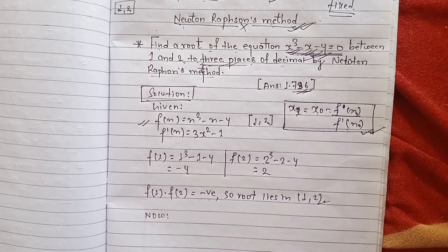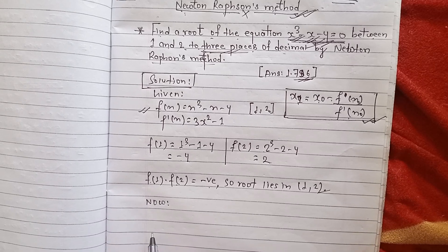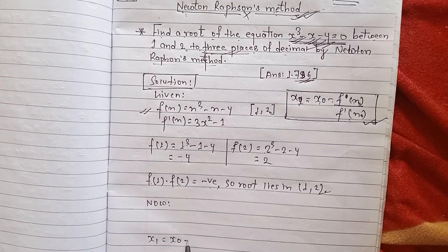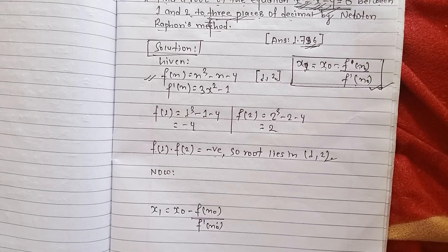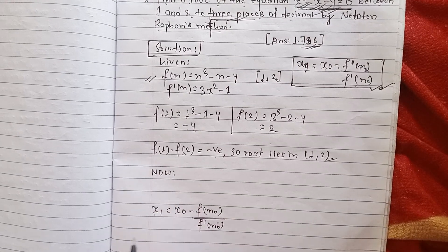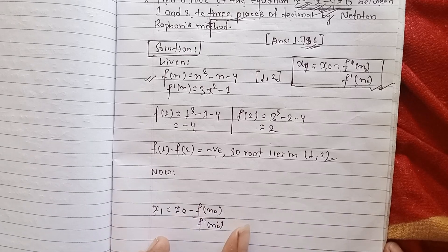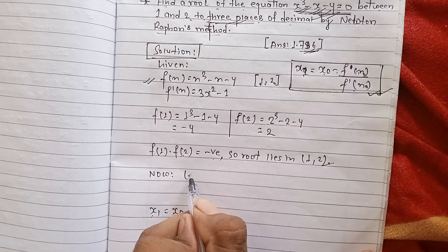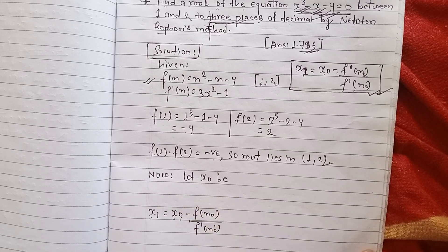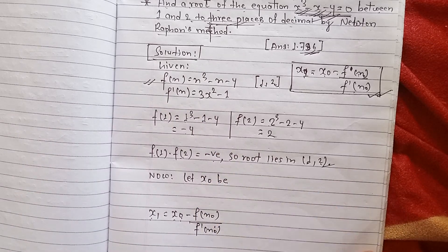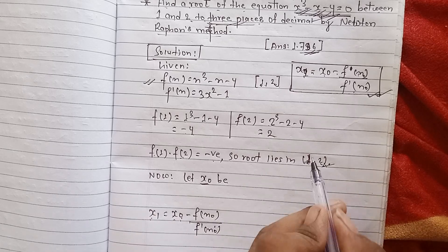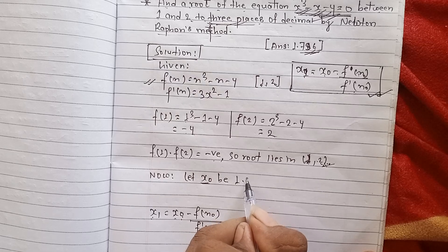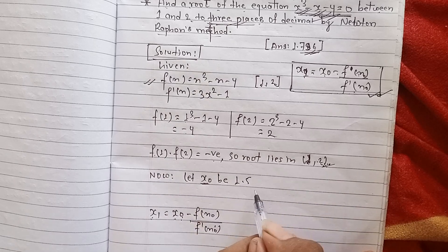Now let me go to the formula. The formula is: x₁ equals x₀ minus f(x₀) divided by f'(x₀). Here x₀ is our initial guess. We assume x₀ = 1.5, so we will use 1.5 as our starting value.